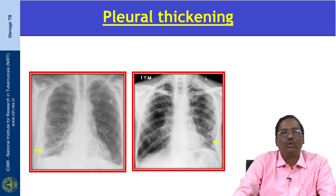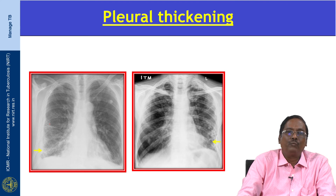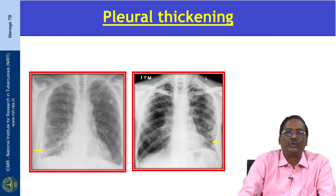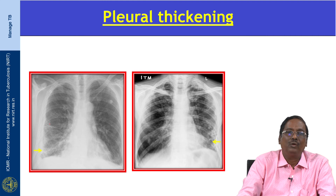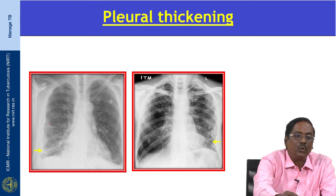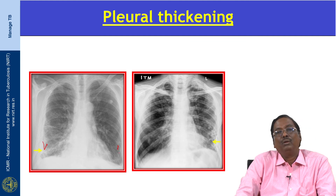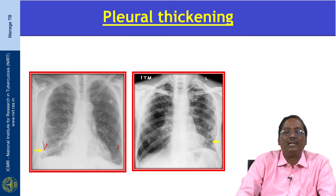Next is pleural thickening. In pleural effusion due to post-primary TB, the pleural effusions are infected. They present as loculated effusion, and there is a delay in healing, forming more pleural thickening or calcification. Pleural thickening is seen in the visceral pleural layer; in tuberculosis, the parietal pleura is rarely involved.